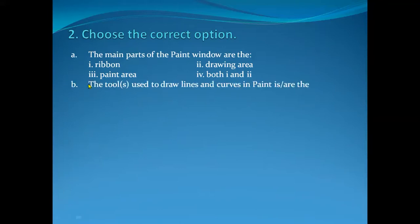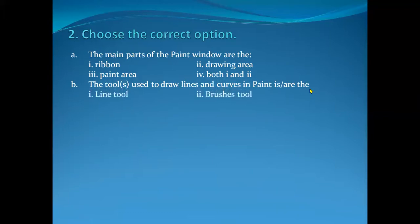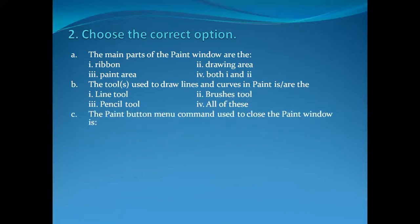Number B: The tools used to draw lines and curves in the Paint are: (1) Line tool, (2) Brush tool, (3) Pencil tool, or (4) All of these. Number C: The Paint button menu command used to close the Paint window is...